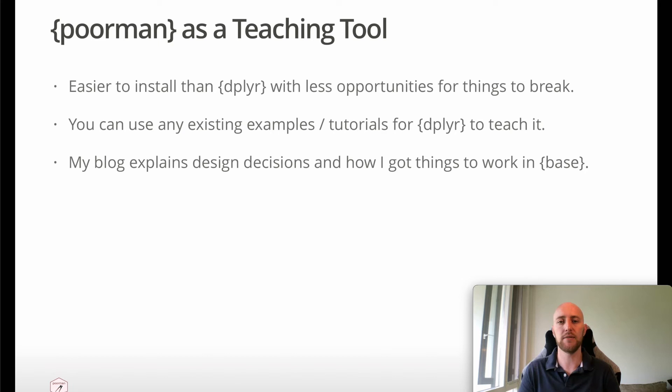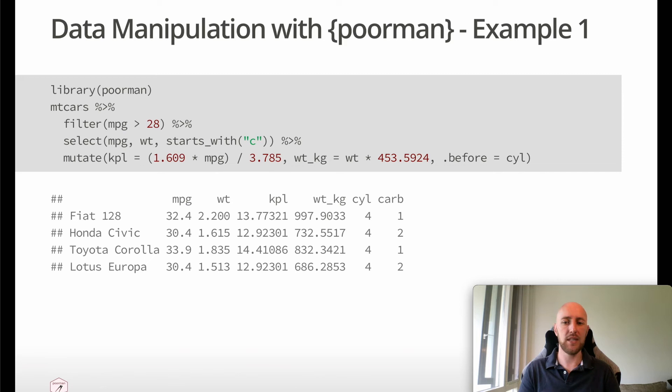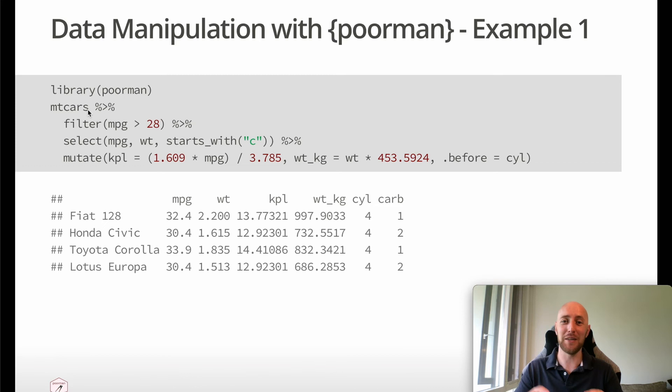So let's take a look at some examples. This is the same example from the start of the talk — all I've done is changed the library call from dplyr to Pawman. I'm taking my mtcars data, filtering, selecting columns, and mutating. A couple of things to highlight: this pipe is not the Magrittr pipe — it's what I call the poor pipe, it's included in Pawman and written in base. And we've got features such as starts_with — tidyselect features — also written in base and included in Pawman. I've got a great blog post which explains how I implemented all of these things.